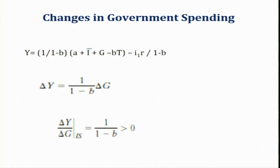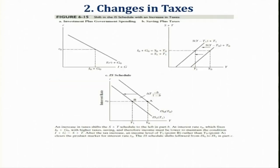So, changes in government expenditure result in an increase in income: del Y is equal to 1/(1-B) times del G. The second factor is changes in taxes. When the government increases taxes, this curve will be shifting leftwards.